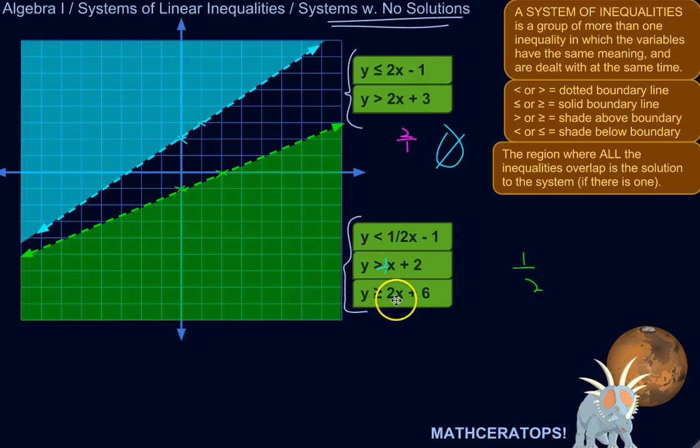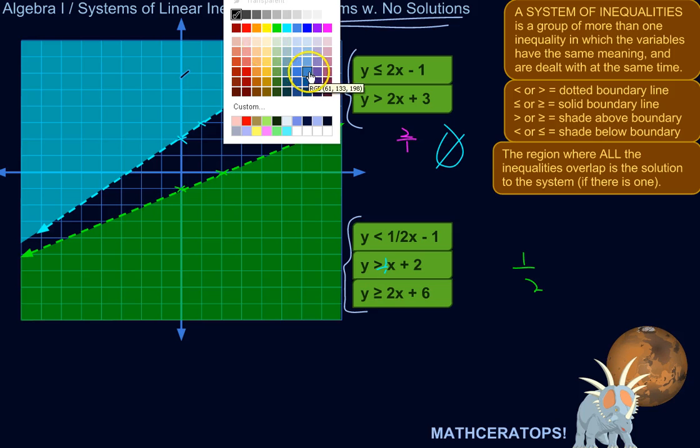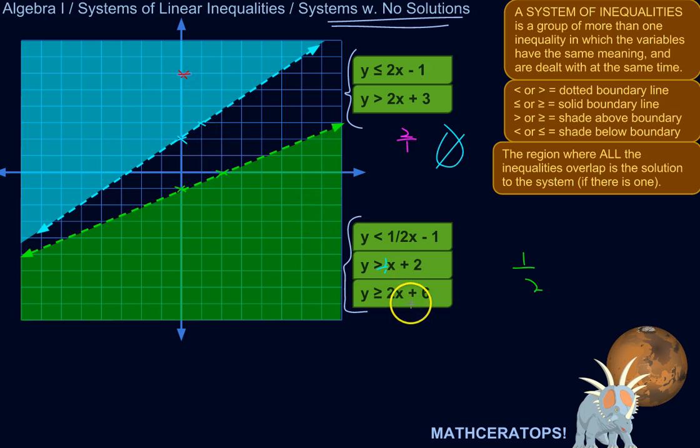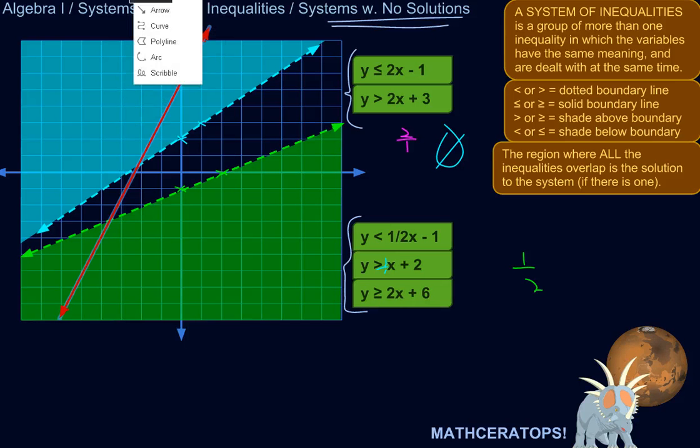And let's do the last one. Y is greater than or equal to 2X plus 6. So the y-intercept will be 6. And then, slope of 2. So up 2 over 1. And it's greater than or equal to, so it's a solid line. And it's greater than, so above the line.